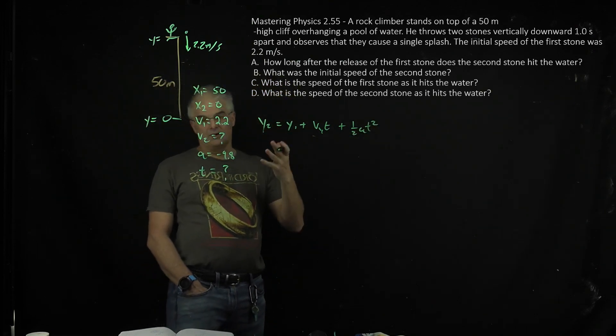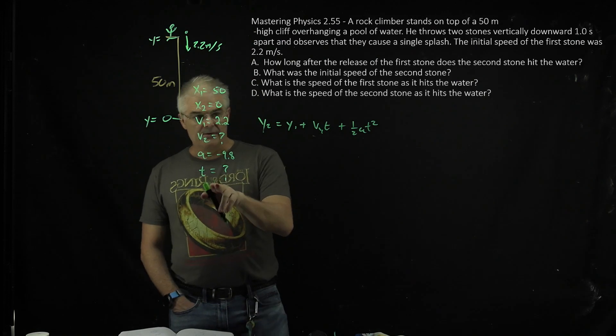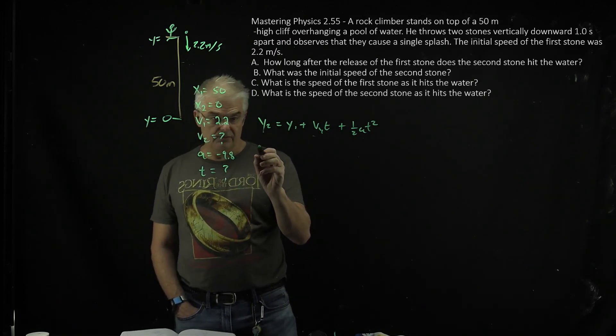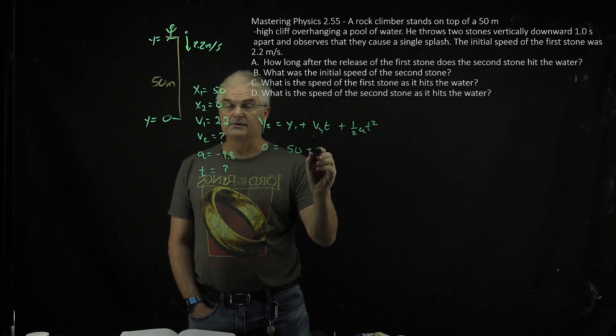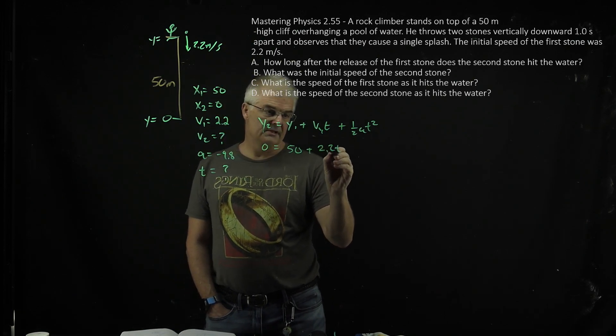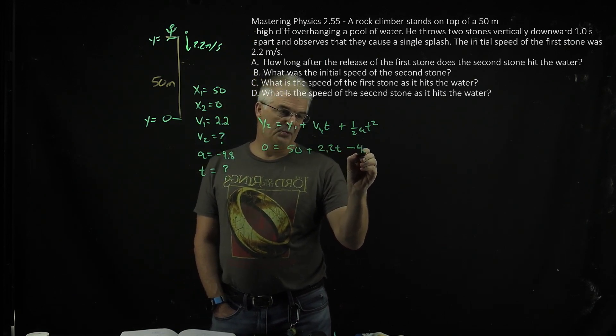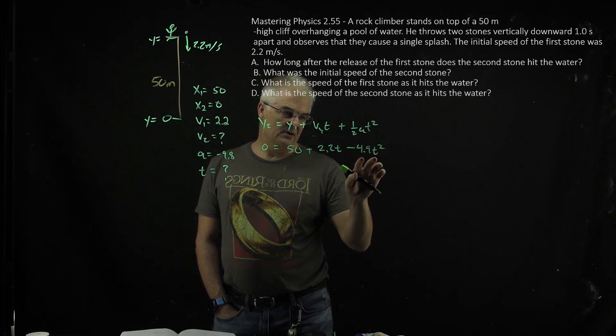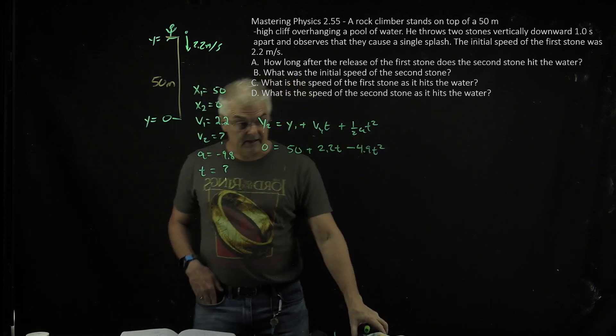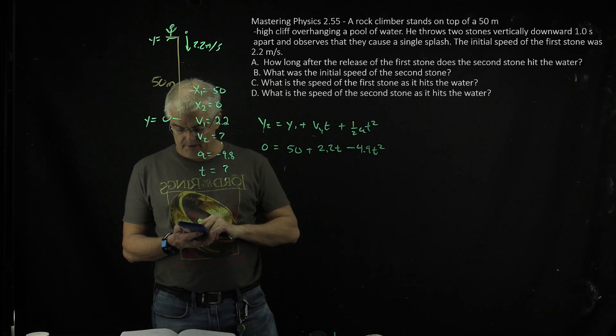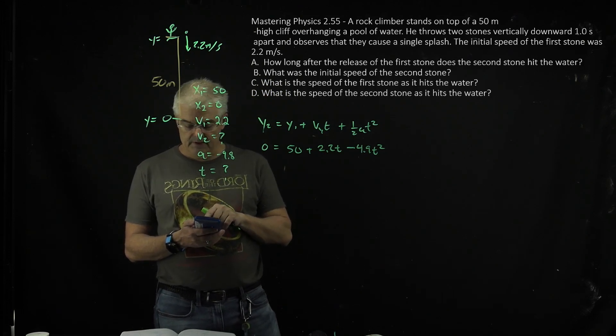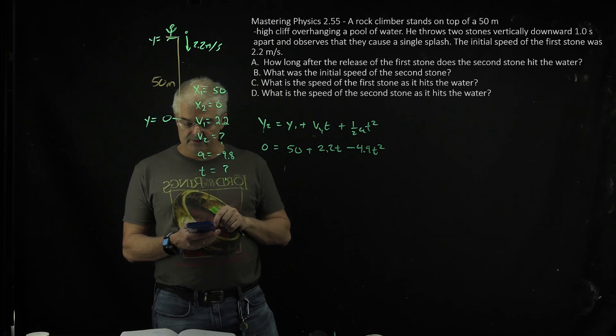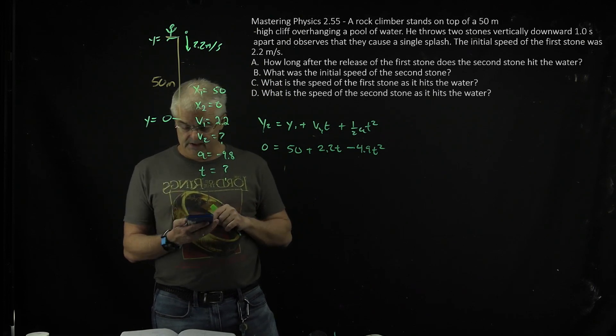So what I want to do is I want to figure out how long. I'm going to solve for the time right here. So y2 equals 0 equals 50 plus 2.2t minus 4.9t squared. Now, I did that quickly, 9.8, and now I get my calculator. This is a quadratic formula problem, and I'm going to use my solver. If you don't know how to use a solver, I've got a video on how to use different solvers on different calculators.